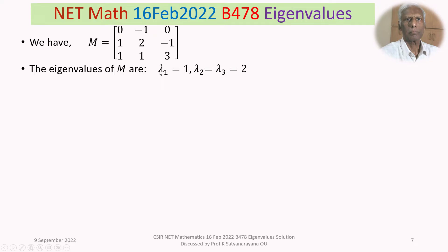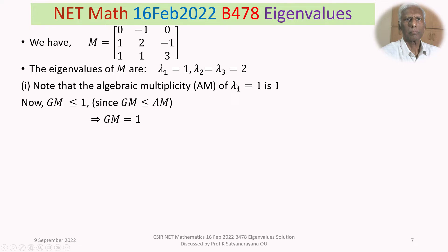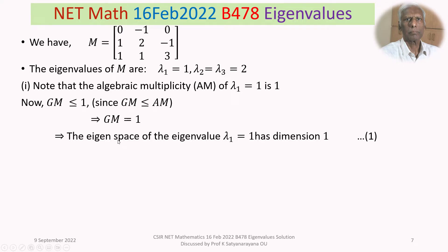The eigenvalues are lambda1 = 1 and lambda2 = lambda3 = 2. The algebraic multiplicity of lambda1 = 1 is 1, since it appears only once. Since geometric multiplicity is always less than or equal to algebraic multiplicity, the geometric multiplicity of lambda1 = 1 is also 1. This means the eigenspace of lambda1 = 1 has dimension 1.